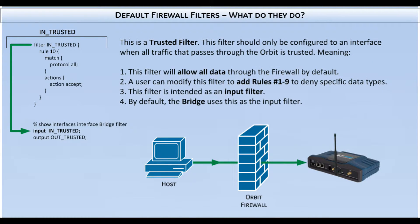Here is a breakdown of the InTrusted filter. This filter should be used on interfaces connected on a local network. It will allow all data to pass through the firewall into the Orbit, but the user also has the ability to add specific deny rules that will block unwanted traffic. The Orbit by default has this filter applied to the bridge interface.